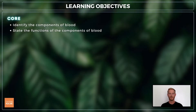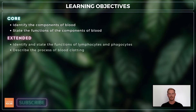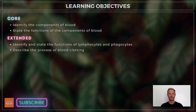For topic 9.4, you need to name and state the functions of the components of blood. For extended, you also need to identify and state the functions of lymphocytes and phagocytes, and describe the process of blood clotting.